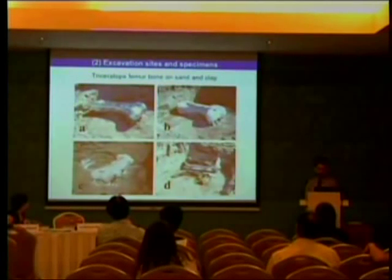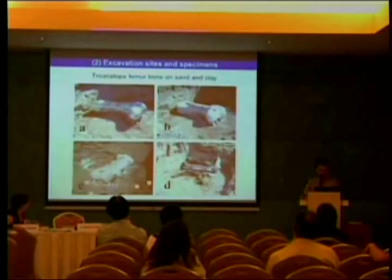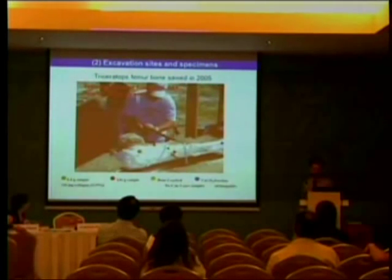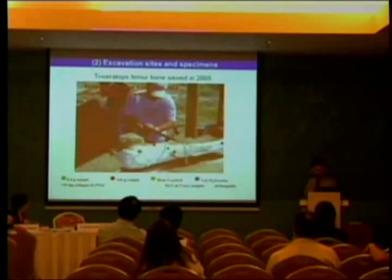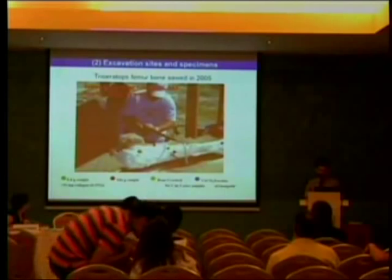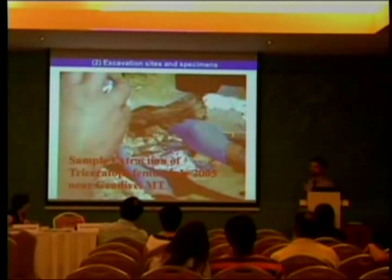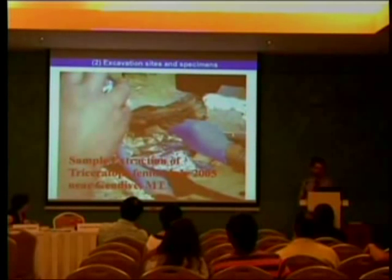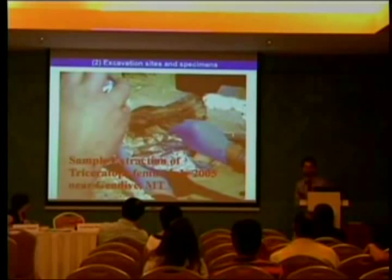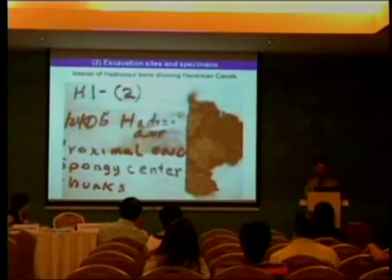This is a specimen of a Triceratops femur bone deposited on sand and clay. This shows how such a bone is sawn into two pieces in order to extract samples from different points. This gives you a view of the interior of such a bone — you see remarkably well-preserved fine structures. And here is the interior of a Hadrosaur bone, which shows Haversian canals — these are the tunnels for the blood vessels.